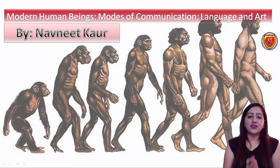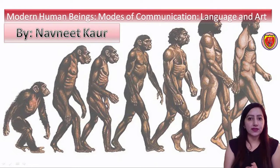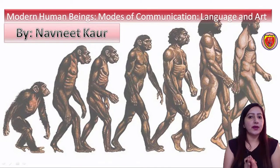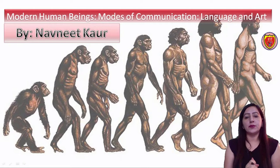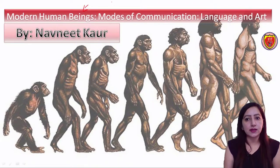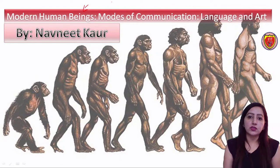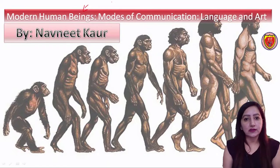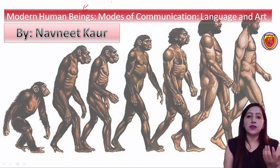Hi everyone, welcome to Education Point. We are covering Class 11 of NCERT, and its first chapter, which we started in our previous video. In that video we were talking about human evolution, the different forms that evolved, and their features. We also started learning about modern human beings - their features, how they were living, which area they were living in, their body structure, what they were eating, and how they were doing their shelters.